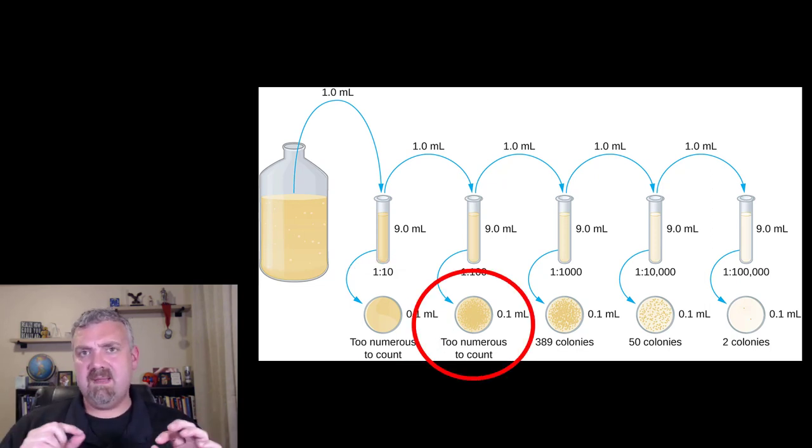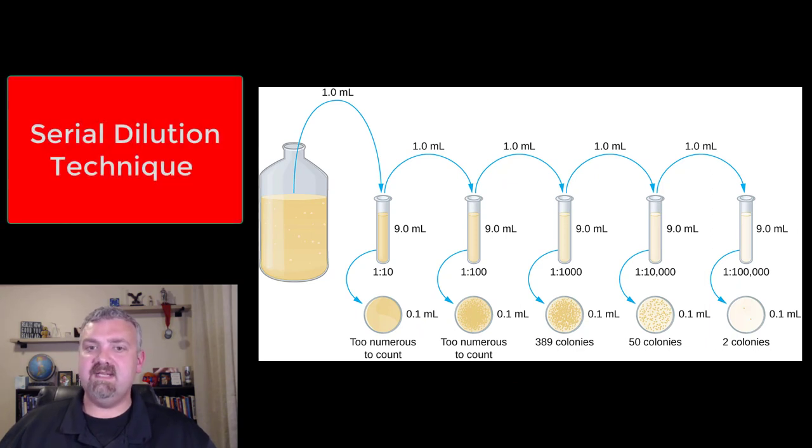And then in the second dilution here, you'd see kind of the same things. Maybe some small colonies are forming, but they can't form full colonies. So there's a reason you have to dilute your samples.